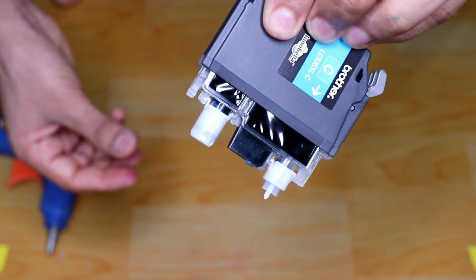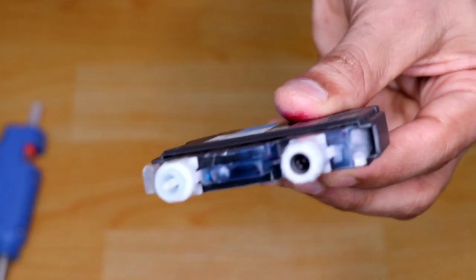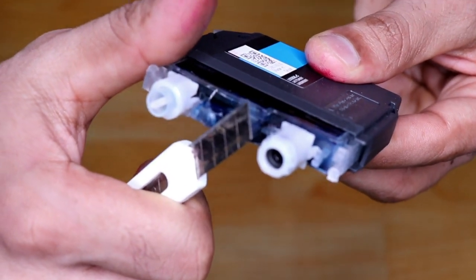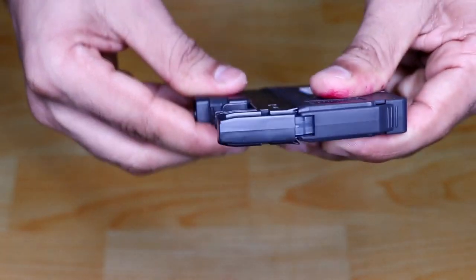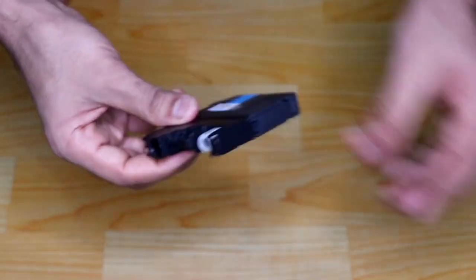Now you can see there is no leakage. The good thing about this glue is that next time whenever you want to refill it, you can simply take it out and make a hole at the same place, so you won't damage the cartridges too much.